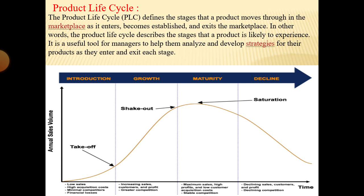The product life cycle is associated with variations in the marketing situation, level of competition, product demands, consumer understanding, etc. Thus, marketing managers have to change their marketing strategy and marketing mix accordingly. This strategy is very useful to managers because it helps them analyze and develop strategies for their products as they enter and exit each stage. That is the end of our lecture — next time we will study another topic.